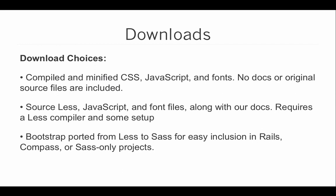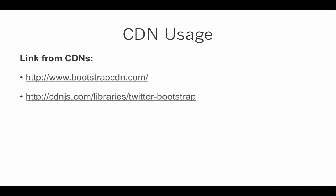The first download choice is to simply download the compiled and minified CSS, JavaScript, and fonts without any of the docs or original source files. This is a reasonable solution if you just want to get up and running quickly and are not interested in heavily customizing Bootstrap. However, if you are interested in customizing, you're also provided with two other options: one being the LESS version, which includes the source LESS files, JavaScript, and font files along with all of Bootstrap's documentation — though this does require a LESS compiler. Additionally, there's a version of Bootstrap ported from LESS to SASS, which is helpful if you're including it in a Rails project or any Ruby-based project where you're using Compass or other SASS-only frameworks.